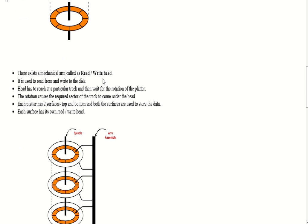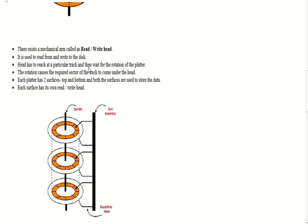The architecture of the disk: the entire disk is divided into plates, the plates are divided into tracks, and the tracks are divided into sectors. A cylinder is formed by combining tracks at a given radius across multiple disk plates. Each surface has its own read-write head. The plates have two surfaces — top and bottom — both used to store data, and the plates rotate while the head stays fixed.